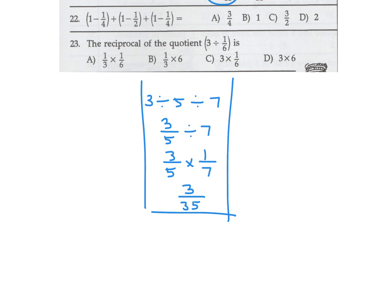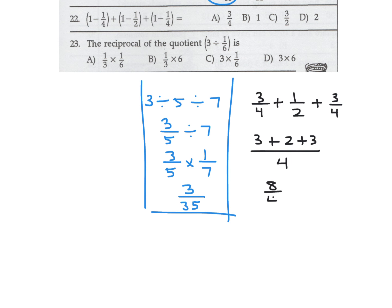1 minus a quarter plus 1 minus a half plus 1 minus a quarter. That gives 3/4 plus 1/2 plus 3/4. Common denominator of 4: 3 plus 2 plus 3 over 4 equals 8/4, which is 2. Number 22, the answer is D.